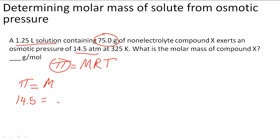We only know the liters, so it's 1.25 liters of solution, and we don't know the moles. So we're going to put moles of X times the ideal gas constant, which is 0.0821, times the temperature, which is 325 kelvin.